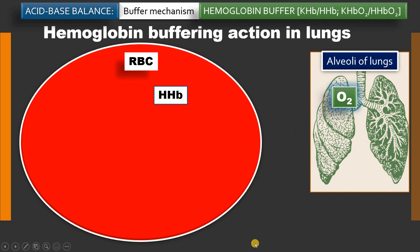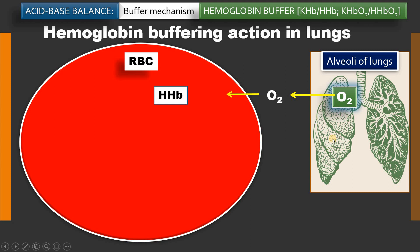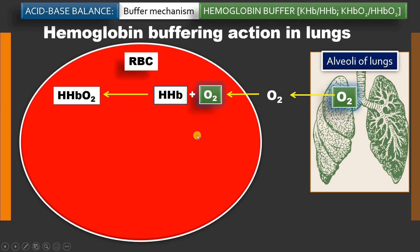Now let's move on to the action of hemoglobin buffer in the lungs. In the alveoli of the lungs there is sufficient oxygen, and the capillaries surrounding the alveoli contain deoxyhemoglobin. The oxygen from the alveoli diffuses inside the RBC, where it combines with deoxyhemoglobin to form oxyhemoglobin.